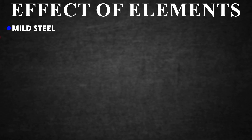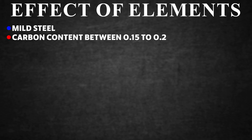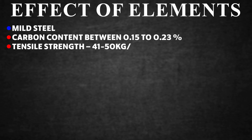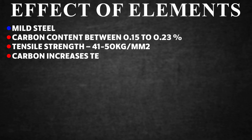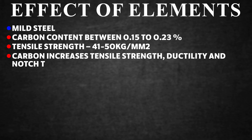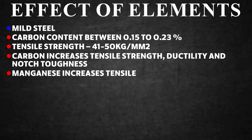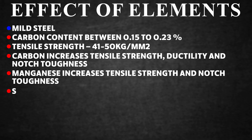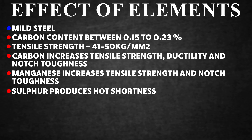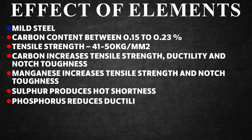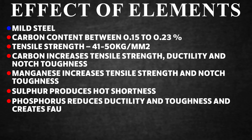Effect of Elements in Mild Steel. Carbon content: 0.15–0.23%; tensile strength 41–50 kg/mm². Carbon increases tensile strength but reduces ductility and notch toughness. Manganese increases tensile strength and notch toughness. Sulfur produces hot shortness. Phosphorus reduces ductility and toughness and creates faults.